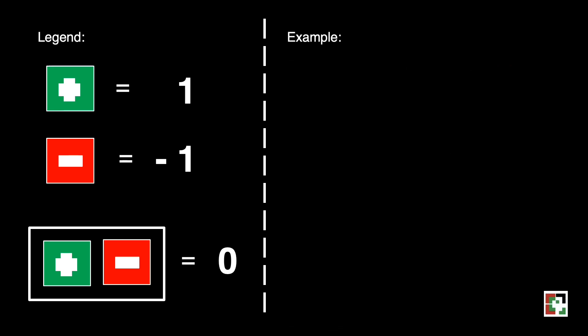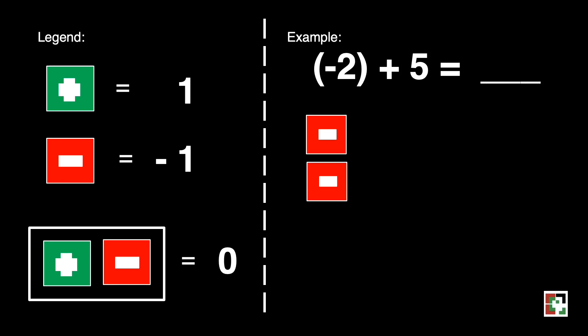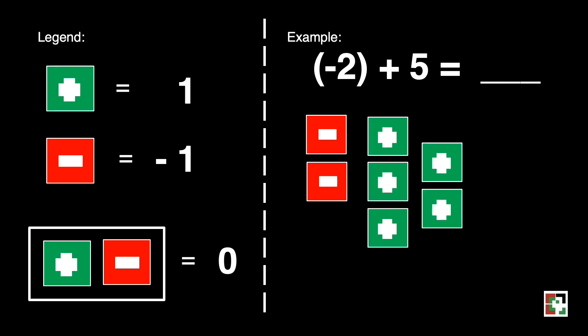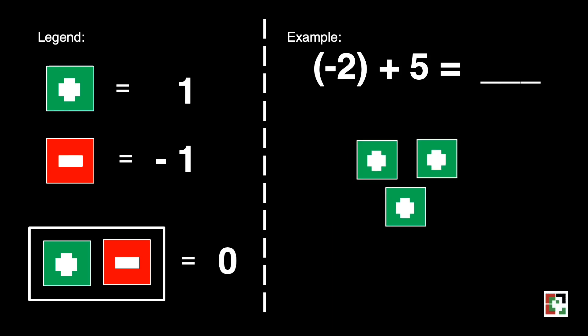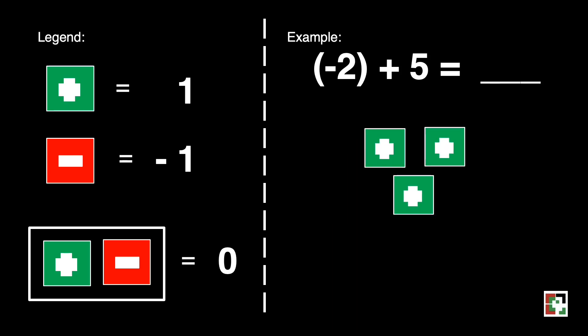Next: negative 2 plus 5 is equal to blank. Negative 2 is represented by 2 red squares, while 5 is represented by 5 green squares. Let's find the 0 pairs. Let's rearrange these squares. We have 2 zero pairs — 0 plus 0 is equivalent to 0 or nothing. What is left is 3 green squares, which is equivalent to positive 3.